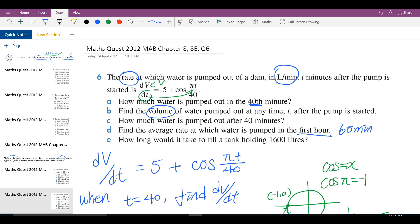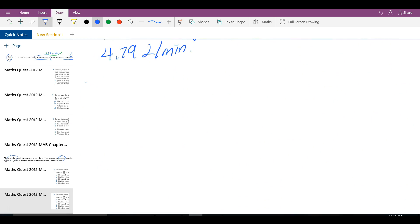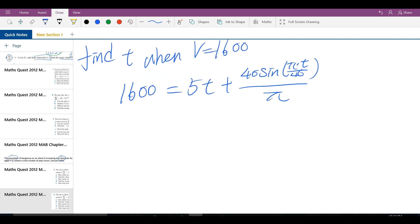Last question I believe. How long would it take to fill the tank holding 1600 liters? So the question is asking for how long. So we're looking for T. We're just looking for T using the volume function. So this one, find T when V equal to 1600. So your function would be 1600 equal to 5T plus 40 sine pi T over 40 all over pi. So let's try to find that. You know what, I'm going to use the cheating way. I'm going to plot this function in Desmos and find my answer over there.